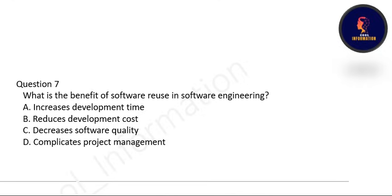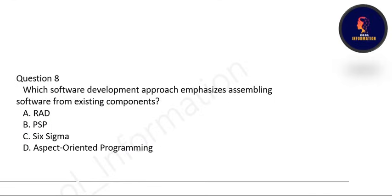Next: what is the benefit of software reuse in software engineering? The benefit of software reuse is to reduce development cost — if we reuse the software, the development cost will be reduced. Option B is correct. Next: which software development approach emphasizes assembling software from existing components? Option A is correct — RAD, rapid application development. The full form of RAD is Rapid Application Development.